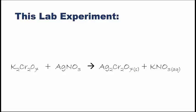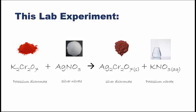Let's take a look at the lab that you're about to do. In this lab, the reactants are solid potassium dichromate and solid silver nitrate. Now because these are both solids, we will dissolve each solid reactant in water so that they can be mixed together easily. When these reactants are combined, they produce silver dichromate, which is a solid product, and potassium nitrate, which will be an aqueous solution.